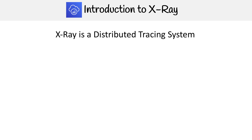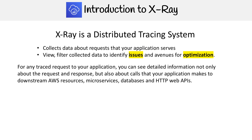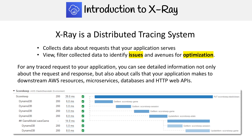X-Ray is a distributed tracing system that collects data about requests that your application serves. It lets you view and filter collected data to identify issues and avenues for optimization. For any traced request to your application, you can see detailed information not only about the request and response, but also about calls your app makes to downstream AWS resources, microservices, databases, and HTTP web APIs. For example, you can see a trace with DynamoDB showing all the steps within the table. Let's move on and start breaking down what the components of X-Ray are.